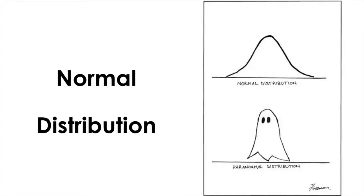Hello everyone. Today I'd like to talk about normal distribution. I'm pretty sure that a lot of you already heard about this distribution before, which is also known as bell-shaped curve or Gaussian distribution. So many naturally occurring measurements of random variables such as height, weight, body temperature, blood pressure, glucose concentration, or even the errors of all these measurements are known to follow normal distribution. And this is considered one of the most important distributions in statistics because it is the base distribution from which other statistical distributions are derived.